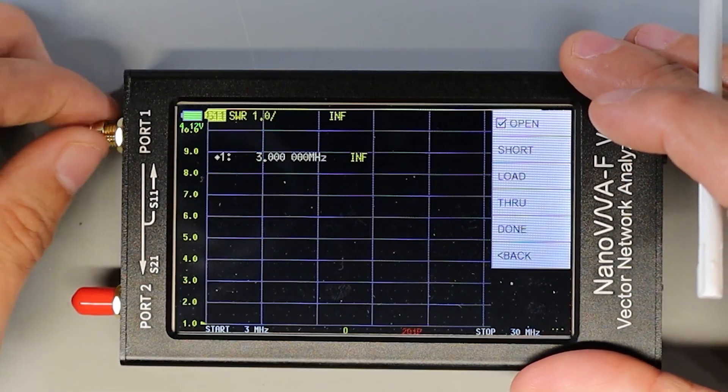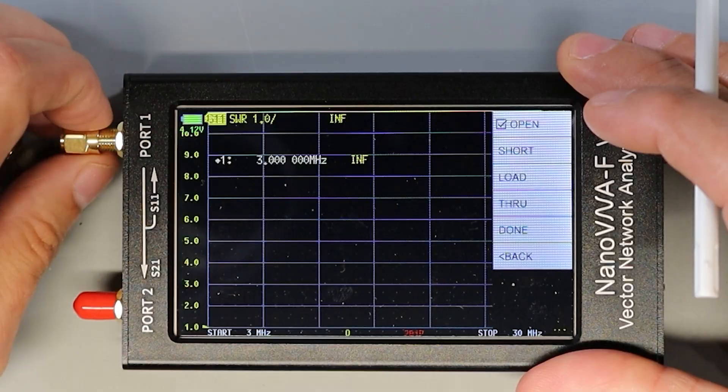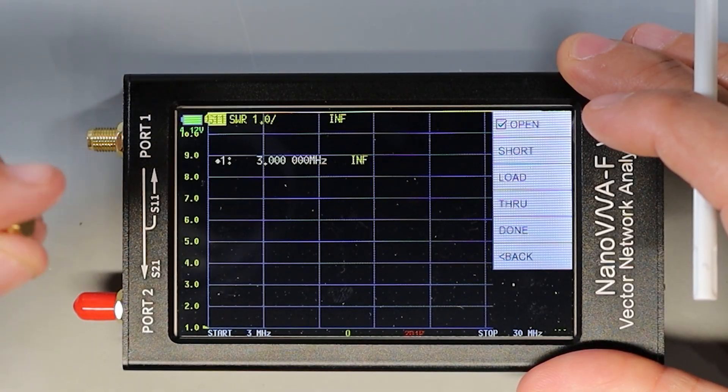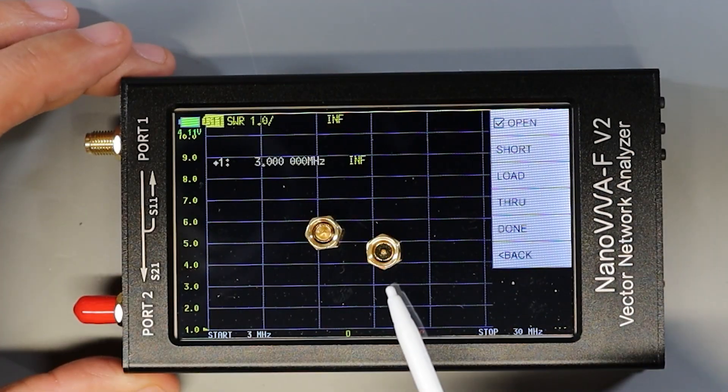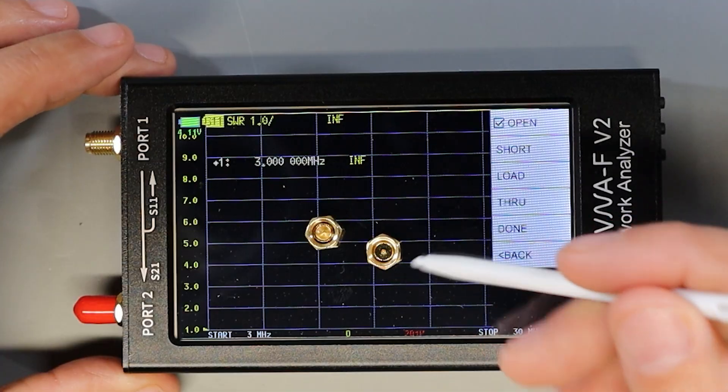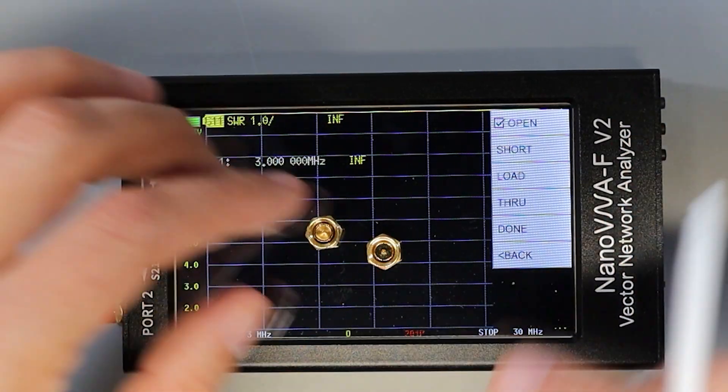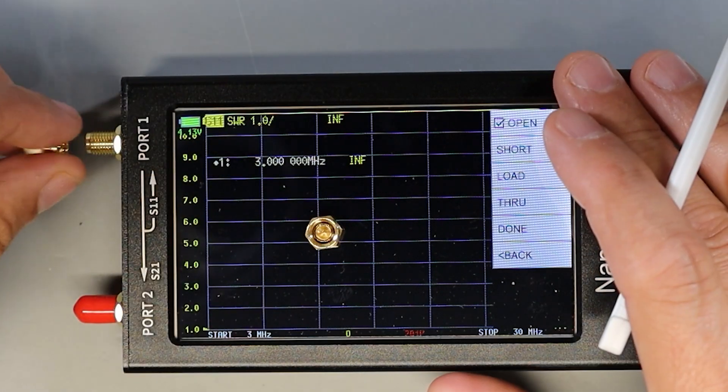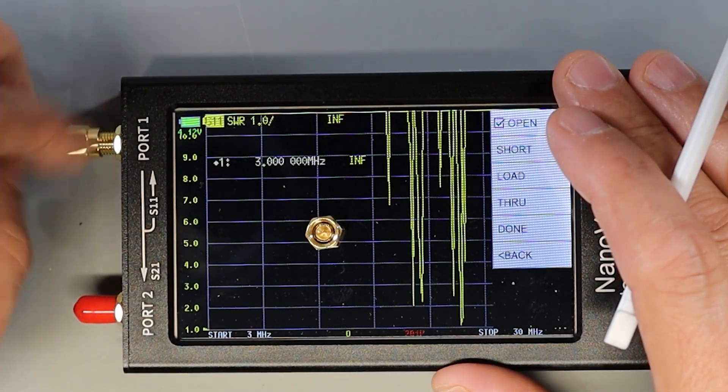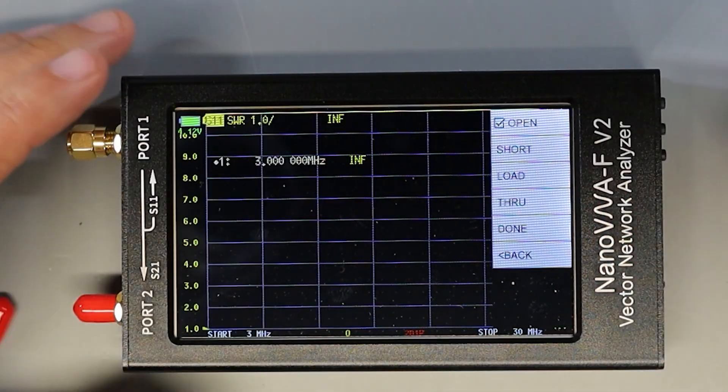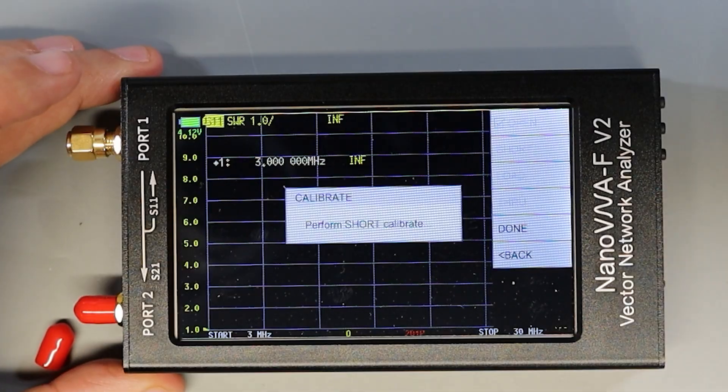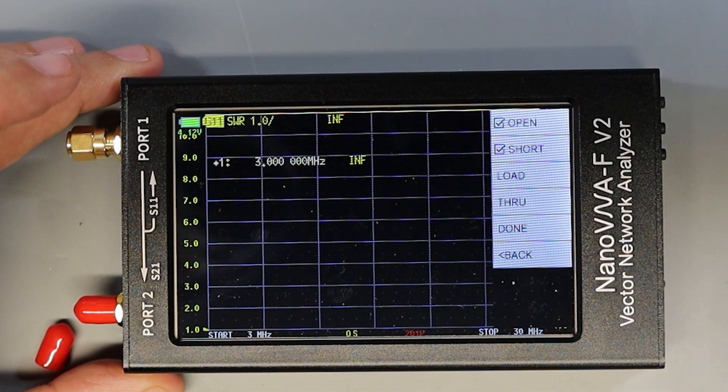In order to do the short calibration we're going to remove the open slug from the port and I'm going to grab the short slug. The short slug is the one with the gold pin in the middle and the gold base with no depression inside and it's the same size as the open slug. So now we'll put this one on port 1 and then click the short button and again it does the short calibration and we see the check mark when it's done.